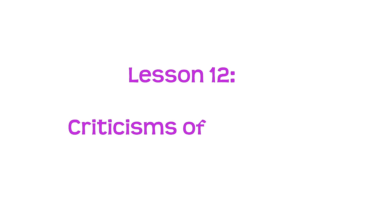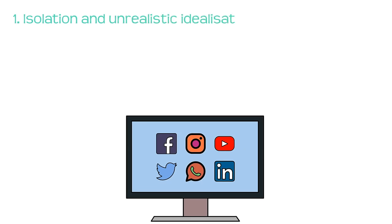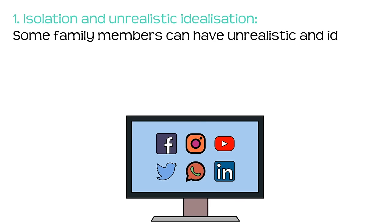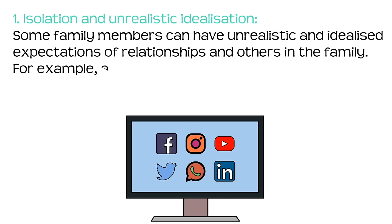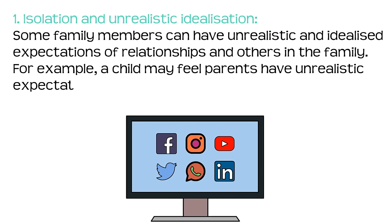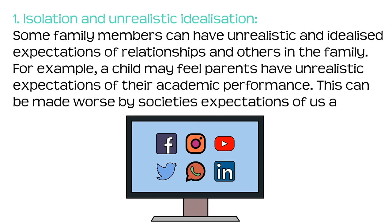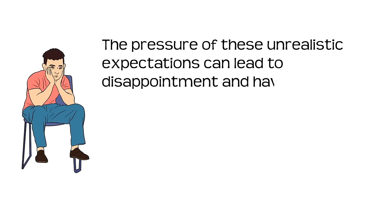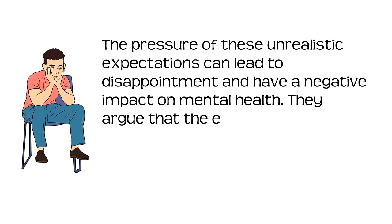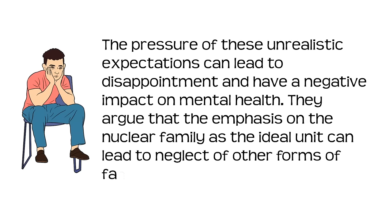Lesson 12: criticisms of families. Number one: isolation and unrealistic idealisation. Some family members can have unrealistic and idealised expectations of relationships and others in the family. For example, a child may feel parents have unrealistic expectations of their academic performance. This can be made worse by society's expectations and social media. The pressure of these unrealistic expectations can lead to disappointment and have a negative impact on mental health. They argue that the emphasis on the nuclear family as the ideal unit can lead to neglect of other forms of family and community support.